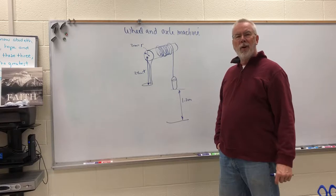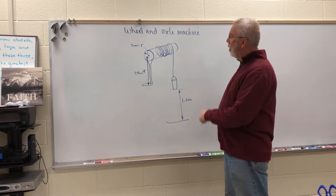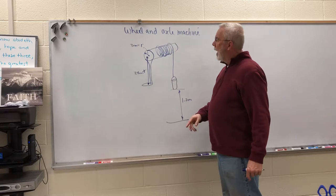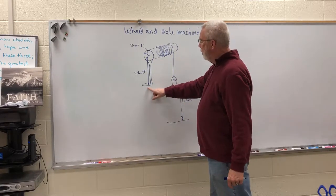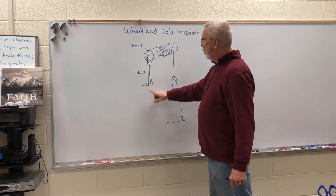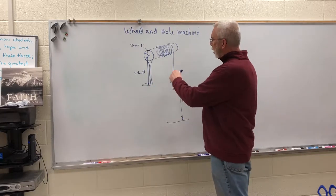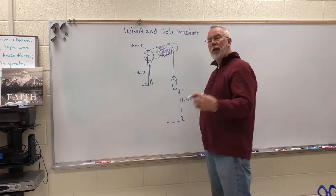First of all, on a wheel and axle machine you may not see the wheel because sometimes all you see is a handle. But like this apparatus here or like a pencil sharpener for example, as you turn the handle you also turn the axle.